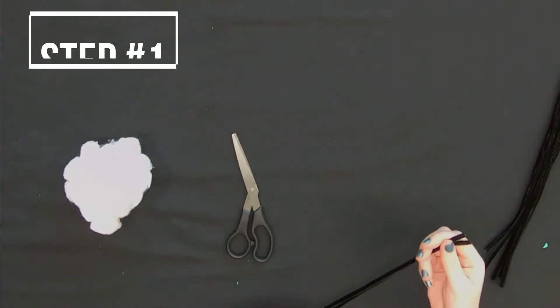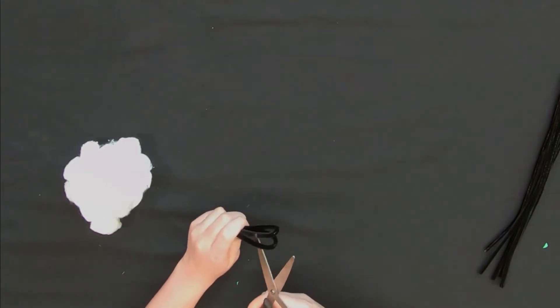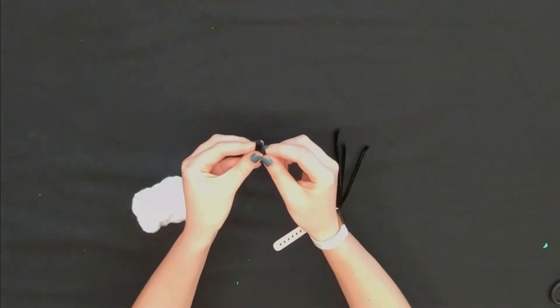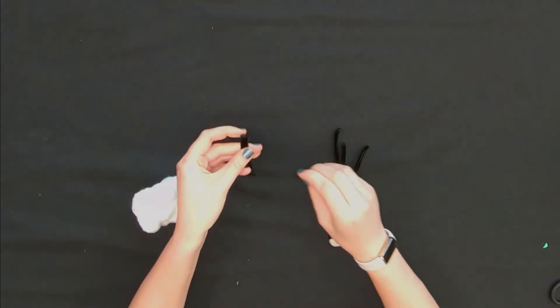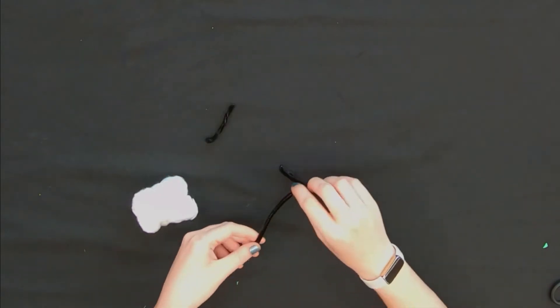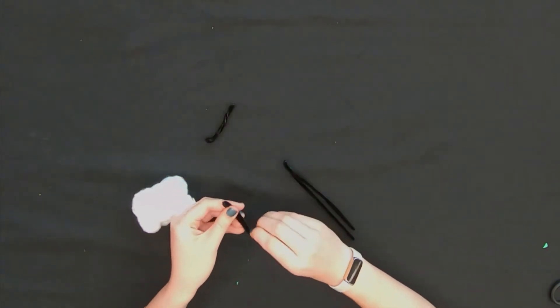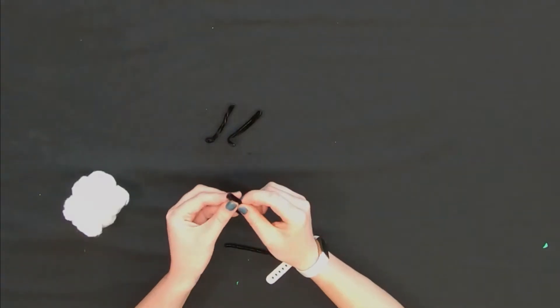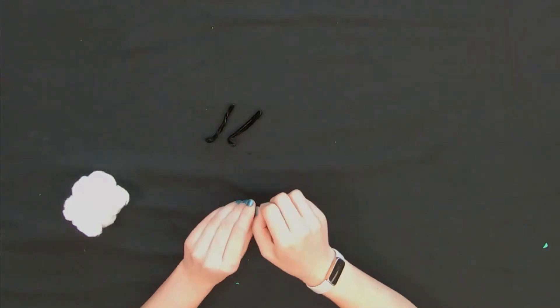The first thing we're going to do is take two of our pipe cleaners, fold them in half, and then cut them. So now you should have four smaller pieces. You're going to take those and twist them, and then fold the bottom to make little legs. Folding them in half and twisting them just helps make them more sturdy.